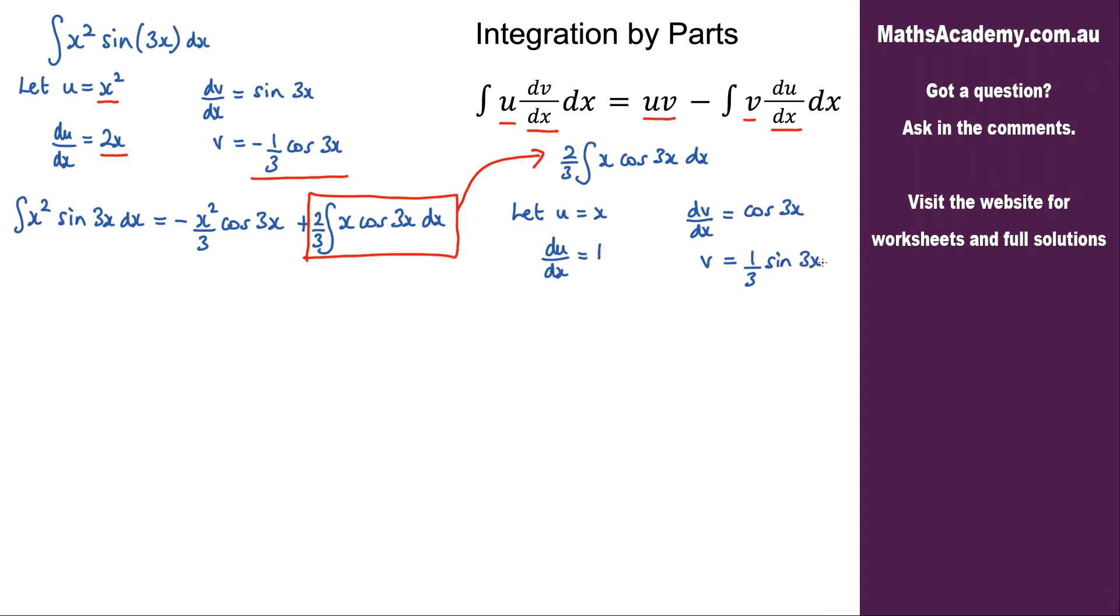Now I can apply the integration by parts formula, remembering we have the two thirds as well. So we get two thirds times u multiplied by v, which is x over 3 sine of 3x, minus the integral of v du dx. Since du dx is just 1, we have one third outside the integral of sine of 3x with respect to x.